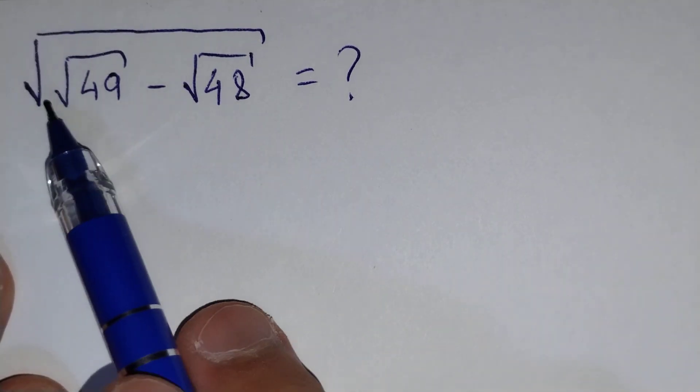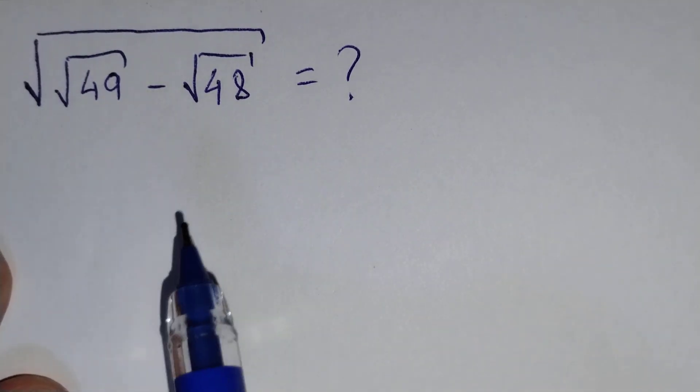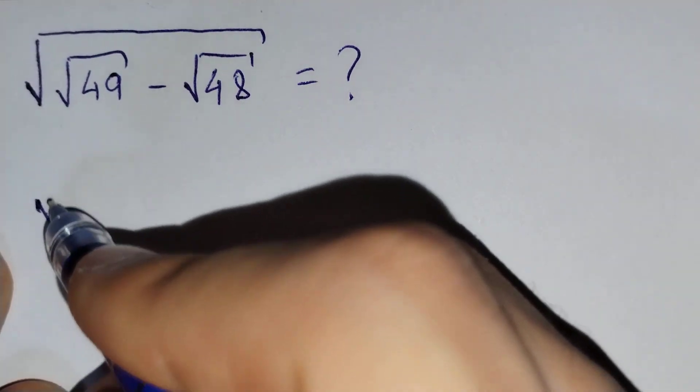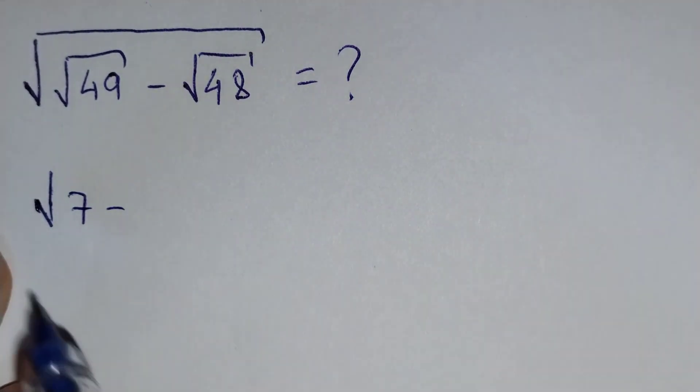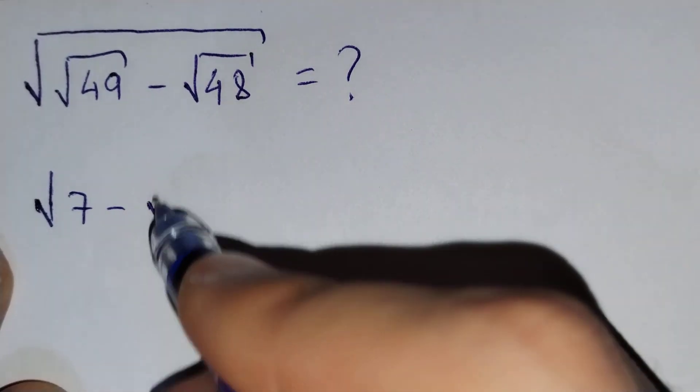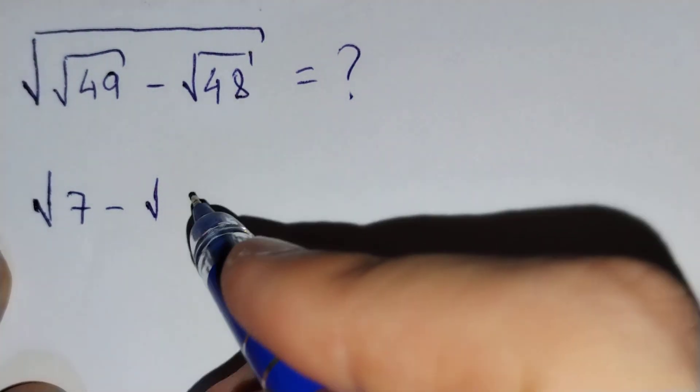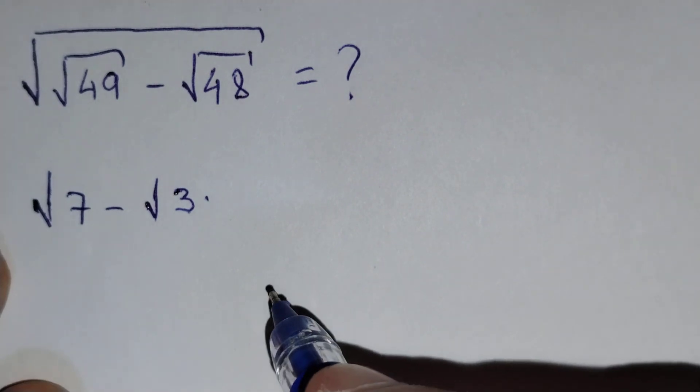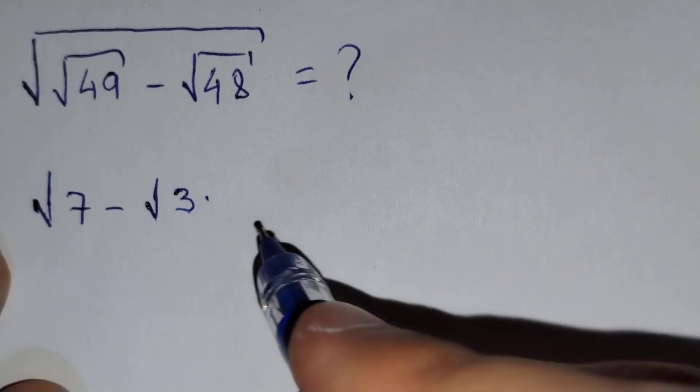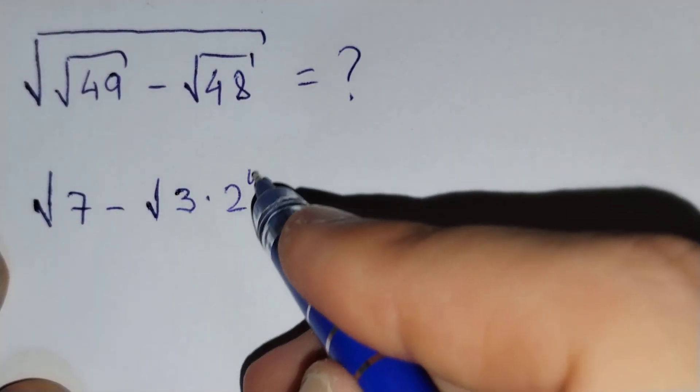Firstly, you know that the square root of 49 equals to 7 minus square root of 48 equals to 3 times 16 which is 2 power 4.